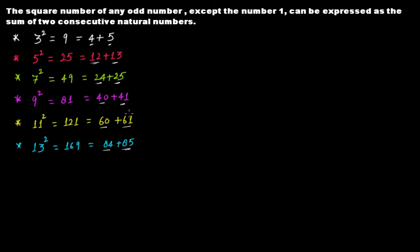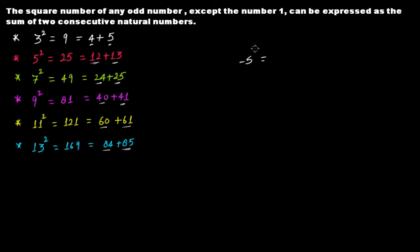The next question that comes to mind is: how do you know what those two numbers will be? Suppose you have to write 223 squared in the form of a sum of two consecutive natural numbers. That's a really good question, and I'll show you another pattern using these examples so you can quickly determine what those two consecutive natural numbers will be.